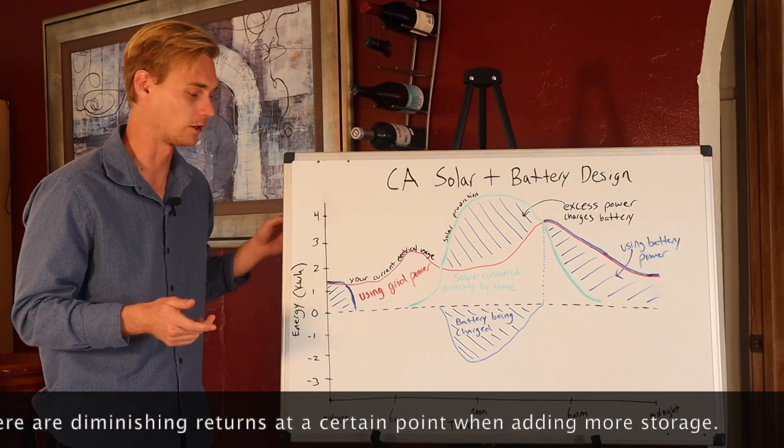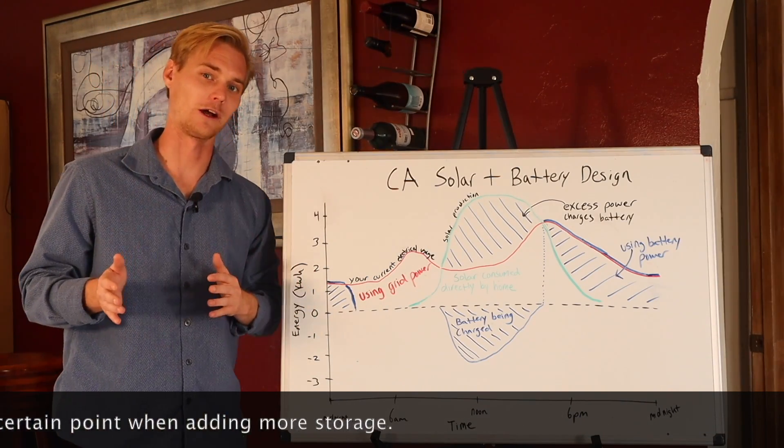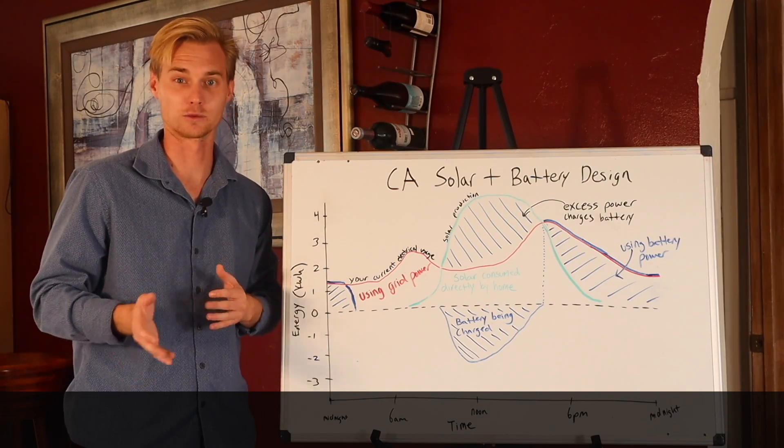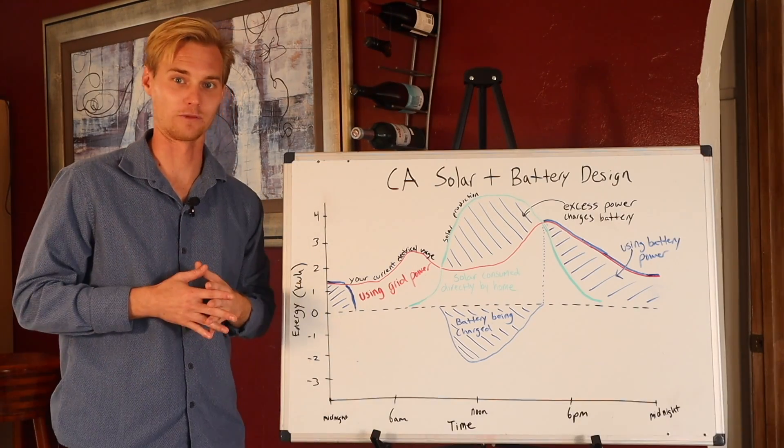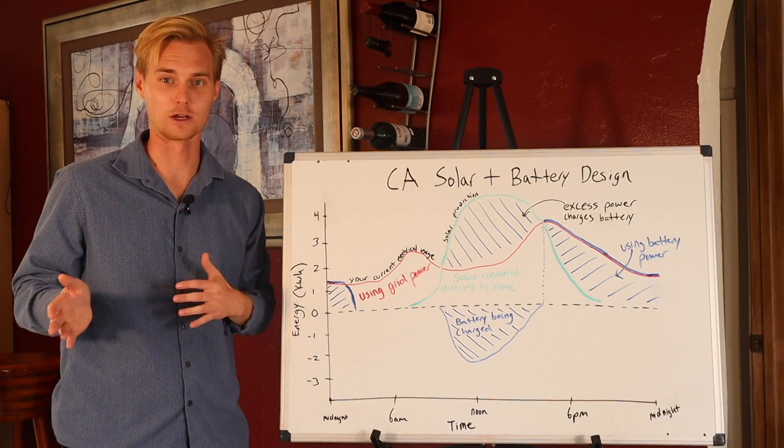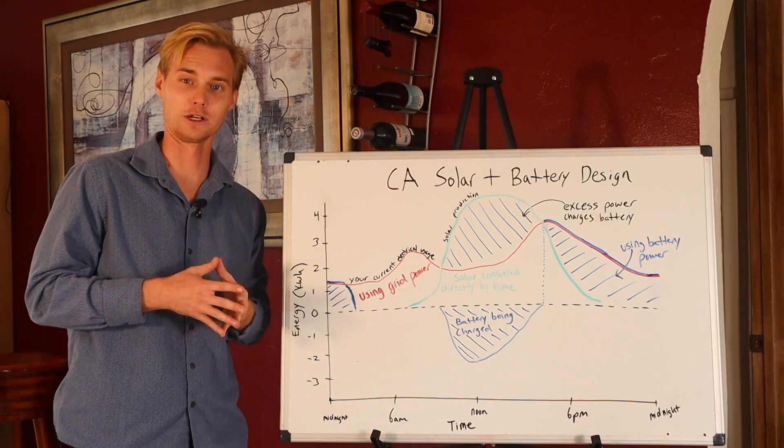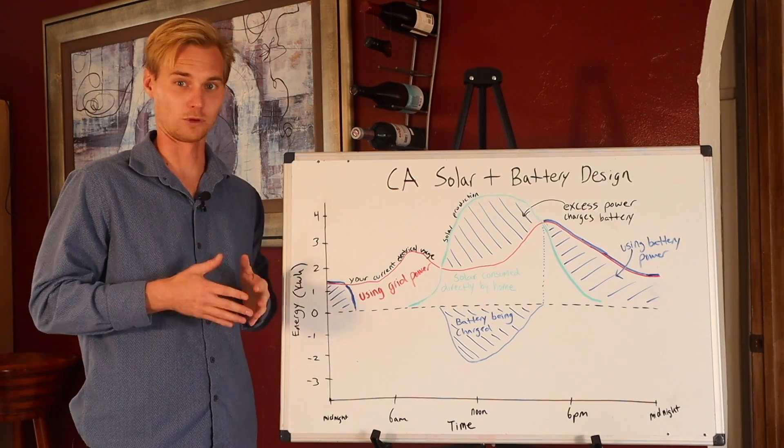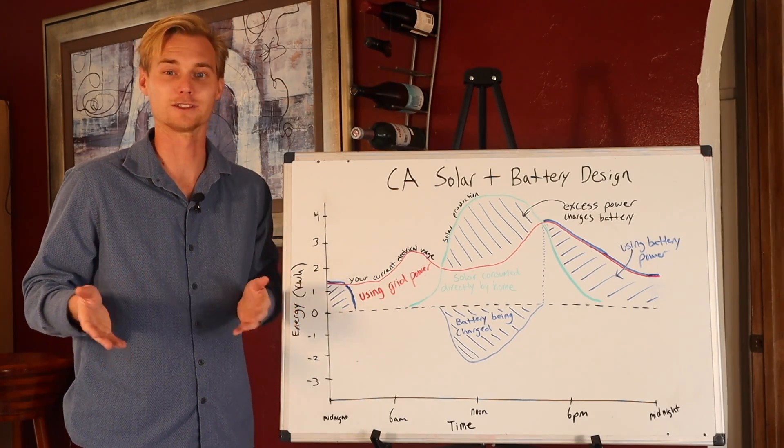In California, we're actually still modeling out these systems, sometimes to see as low as around eight years, which is still better than the majority of the country. So even though California has not great net metering anymore, because the rates from the utility companies are some of the highest in the entire country, going solar still makes sense and saves you money.